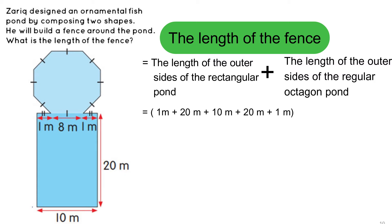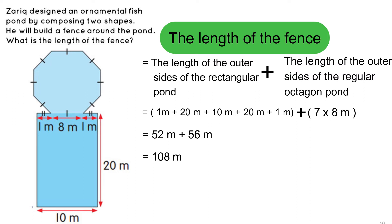The total length of the outer sides of the rectangle is 52 meters, and the total length of the outer sides of the regular octagon is 56 meters. So 52 meters plus 56 meters gives 108 meters. The length of the fence is 108 meters.